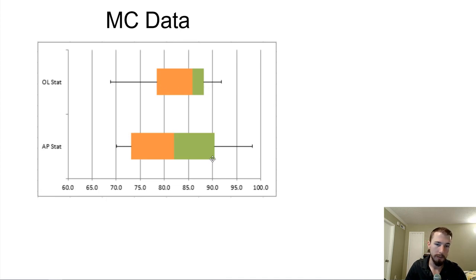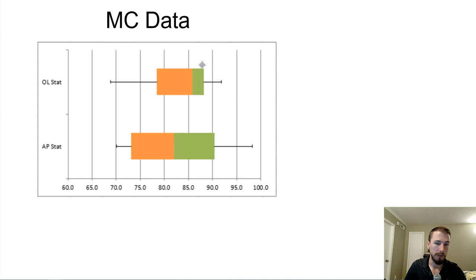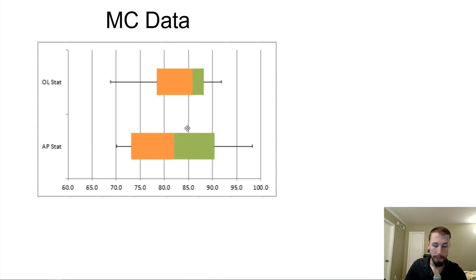For the on-level stat data, a lot of you did really well, but the data was clearly skewed to the left because the left whisker is larger than the right whisker, and the median is closer to the third quartile than the first quartile. For the AP stat class, it looks like it was skewed to the right by some people who scored really well, and the middle interquartile range was roughly unimodal and symmetric. There was more variation in the AP stat class, and I also have almost twice the number of students there.